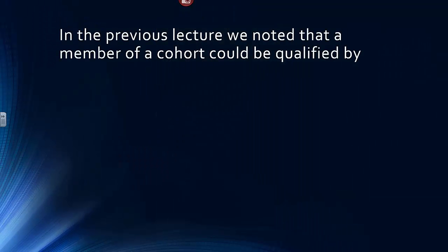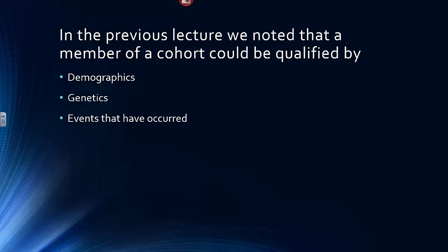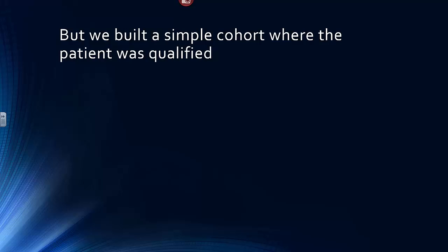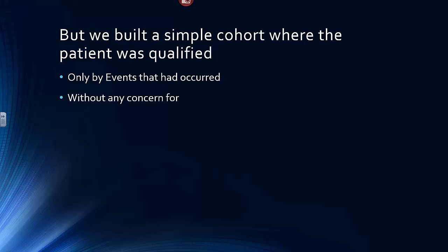In the previous lecture, we noted that a member of a cohort could be qualified by demographics, genetics, events that have occurred, and the sequence of those events — which is temporal relativity. But we built a simple cohort where the patient was qualified only by events that had occurred, without any concern for demographics, genetics, nor the temporal sequence of those events.